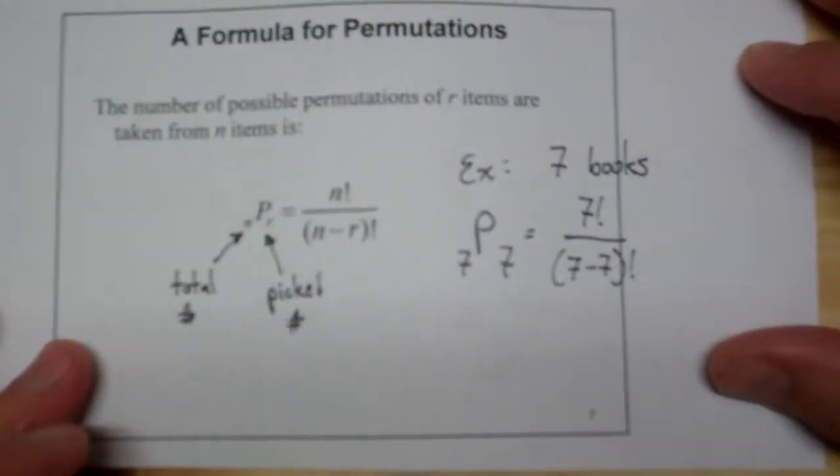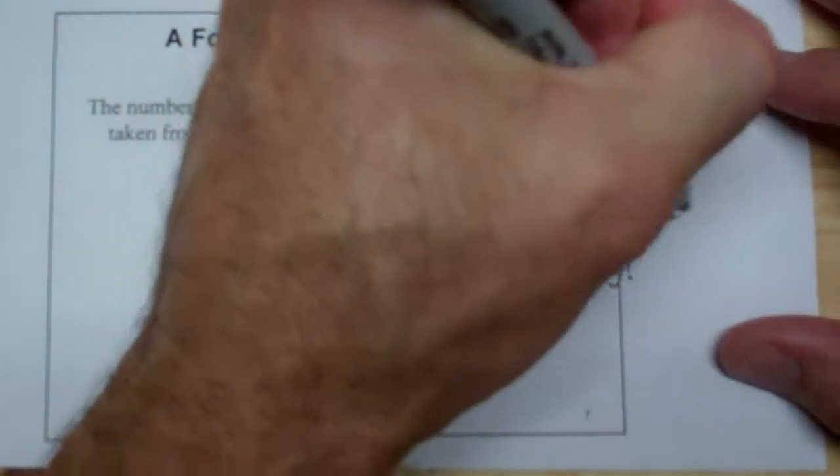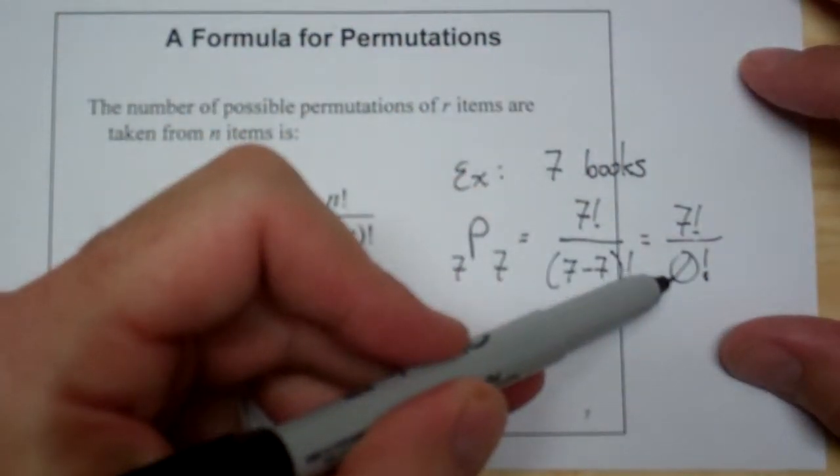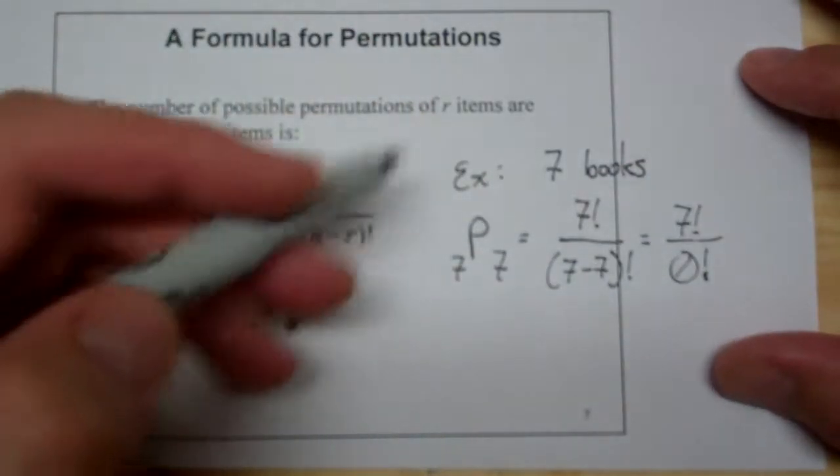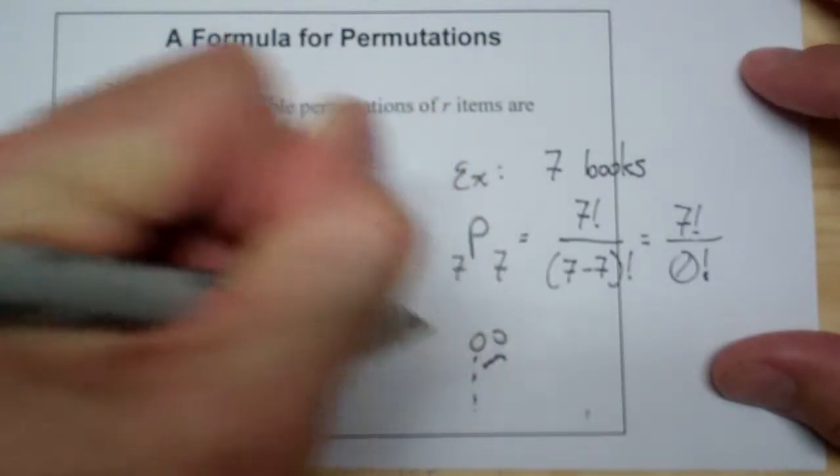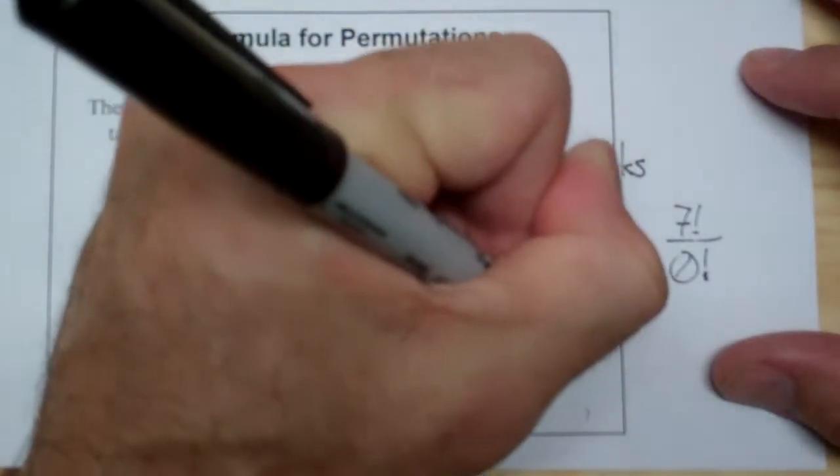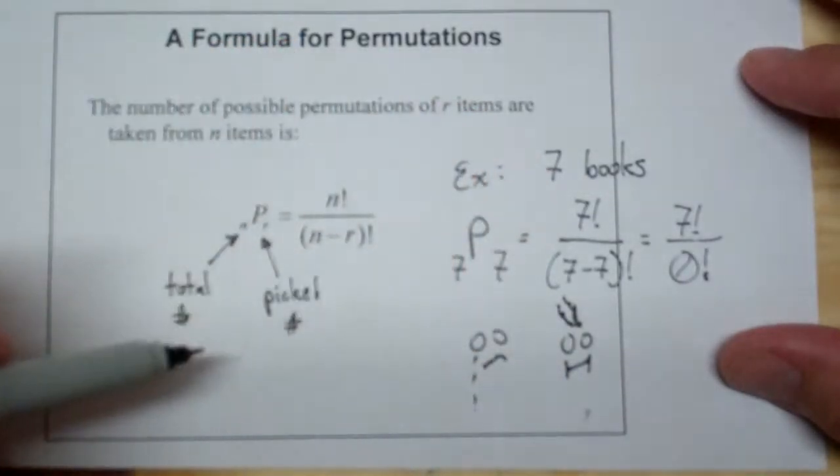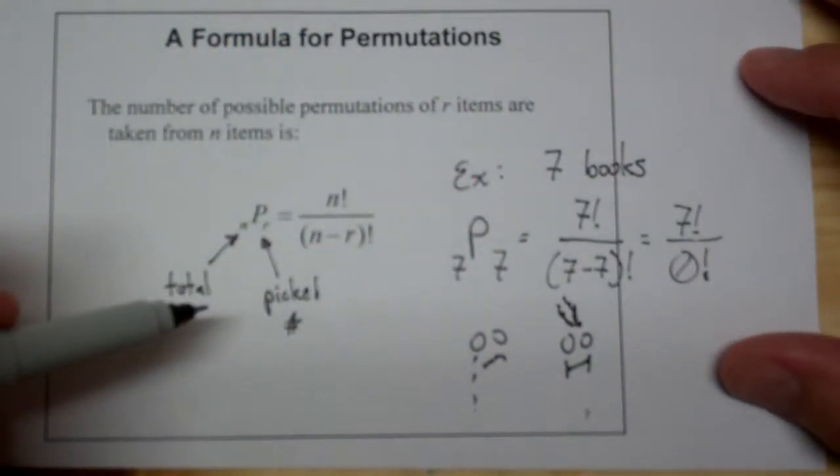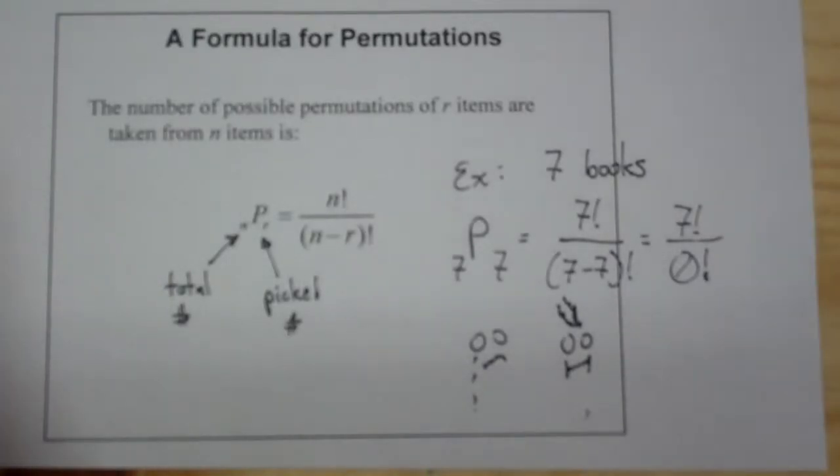Well, the 7 minus 7 factorial is 0. And so it's a really good thing that the 0 factorial is simply 1 and not 0. Because then I'd have a division by 0, and this whole formula would break down, and that would make me very sad or very angry. And I got steam coming off on my head. So this is the idea here. So now let's use this where we don't pick all of the items like we did in the book.